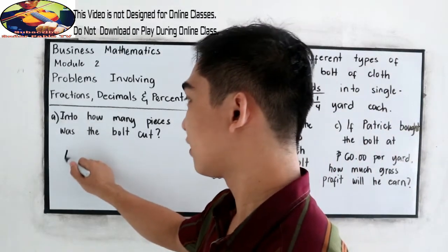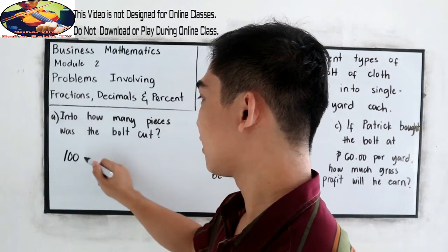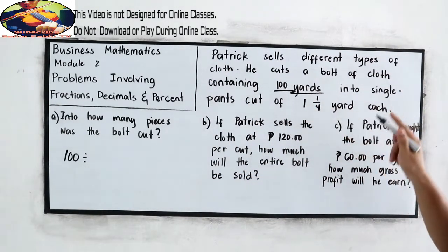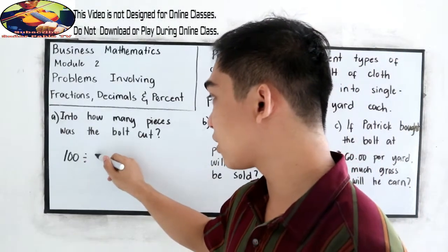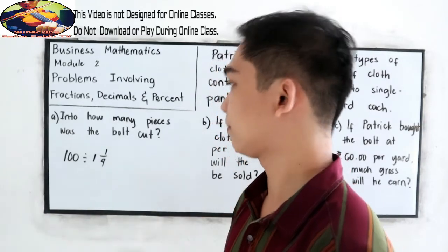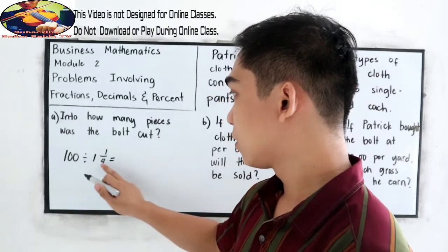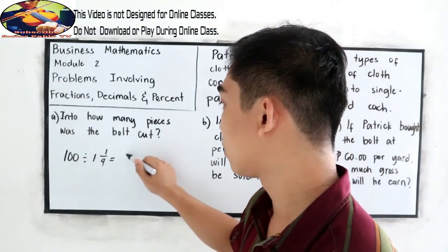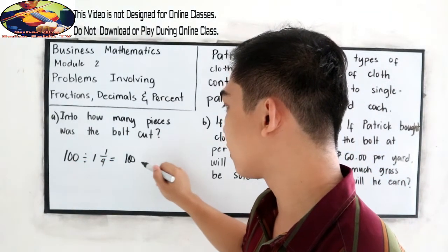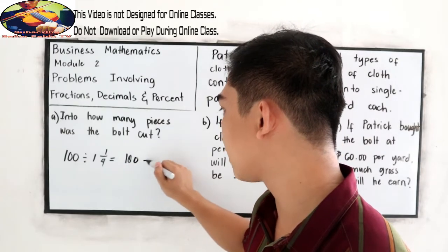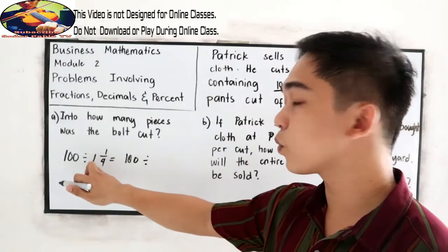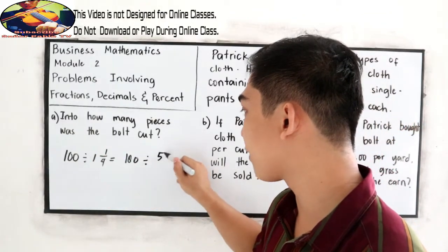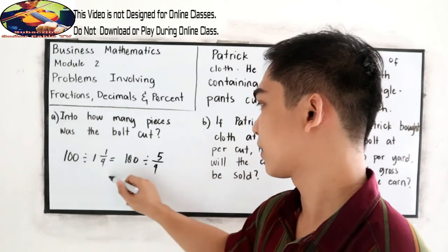Patrick cut 100 yards into 1 and 1/4 yard each. So we divide 100 by 1 and 1/4. Let us write it as an improper fraction. 1 and 1/4 is 4 times 1 plus 1, which is 5 over 4.